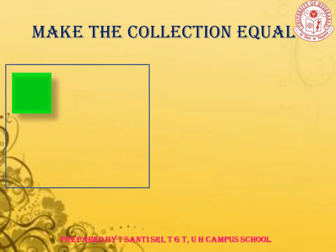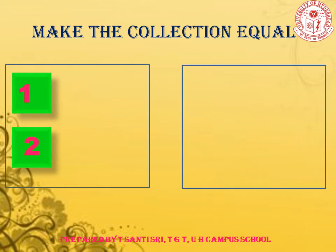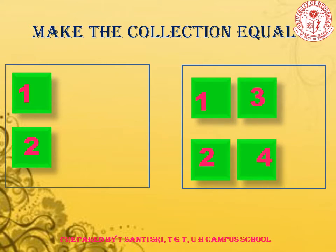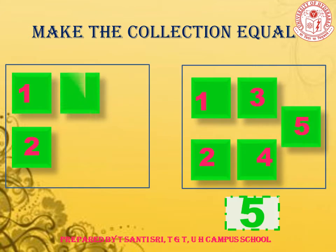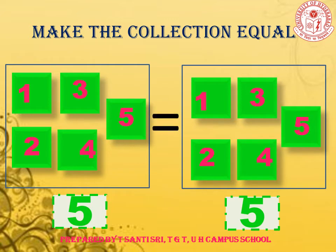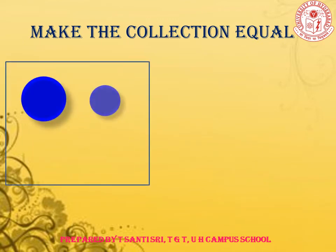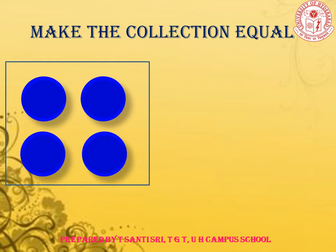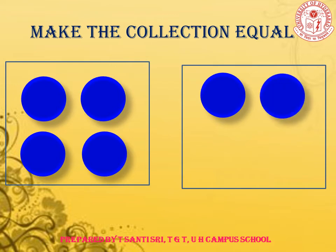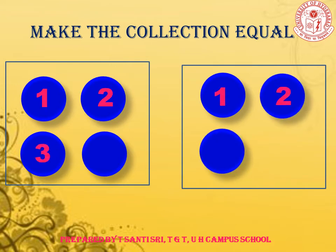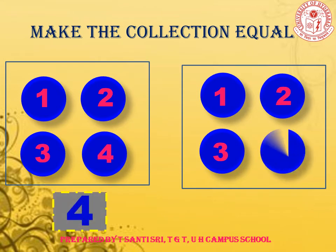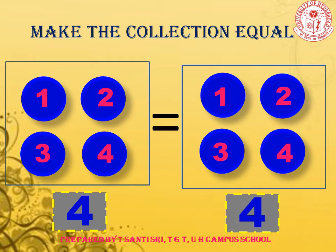Children, here we have 2 more groups to make the collection equal. In each group we have squares. In the 1st group we have 2 squares and in the 2nd group we have 5 squares. To make the collection equal, we need to draw 3 more squares in the 1st group. Now here we have 2 groups with circles. In the 1st group we have 4 circles and in the 2nd group we have 3 circles. To make the collection equal, we need to draw 1 more circle in the 2nd group. Now in both groups we have 4 circles.